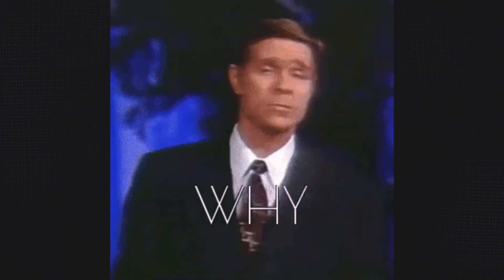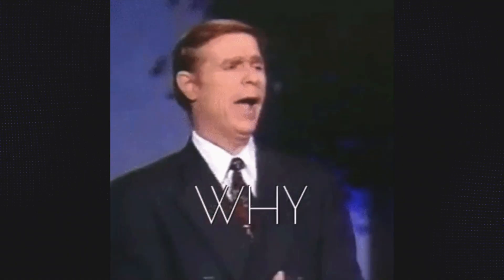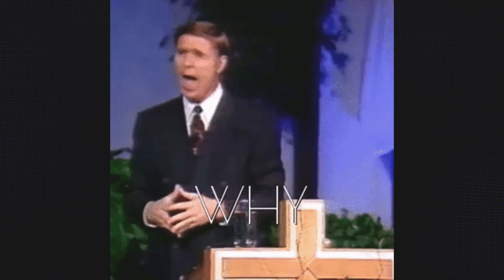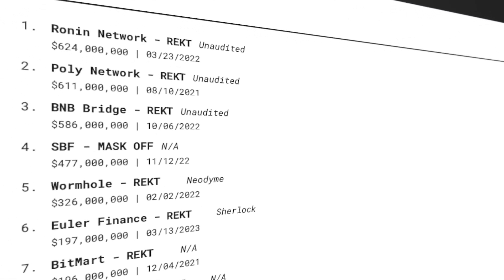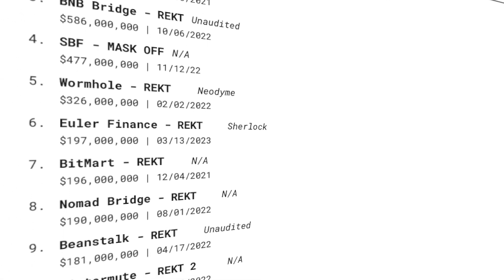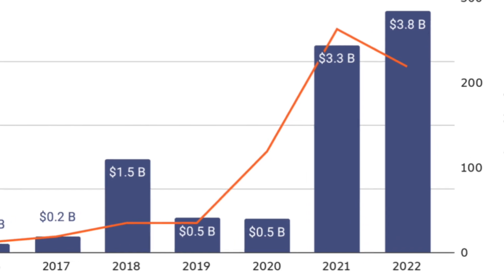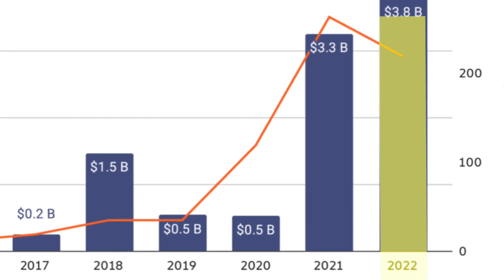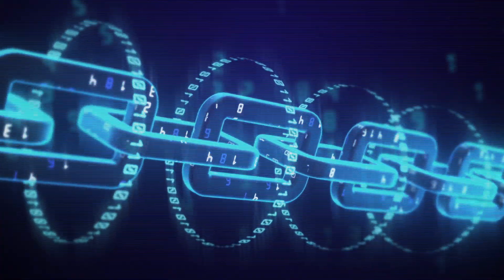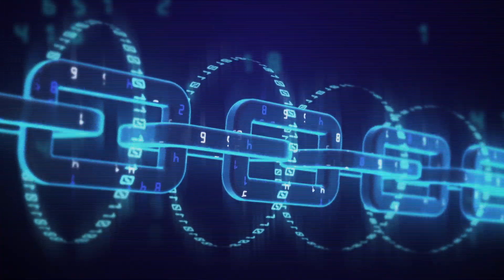Why are audits so important? Why is it critical that you get an audit before deploying your codebase to a live blockchain? Well, for starters, there are entire websites dedicated to tracking how many hacks happen. Last year, we saw the most value ever stolen from smart contracts, with almost $4 billion stolen. Due to the immutability of the blockchain, once a smart contract is deployed, you can't change it — so you better get it right. A blockchain is a permissionless, adversarial environment, and your protocol needs to be prepared for malicious users.